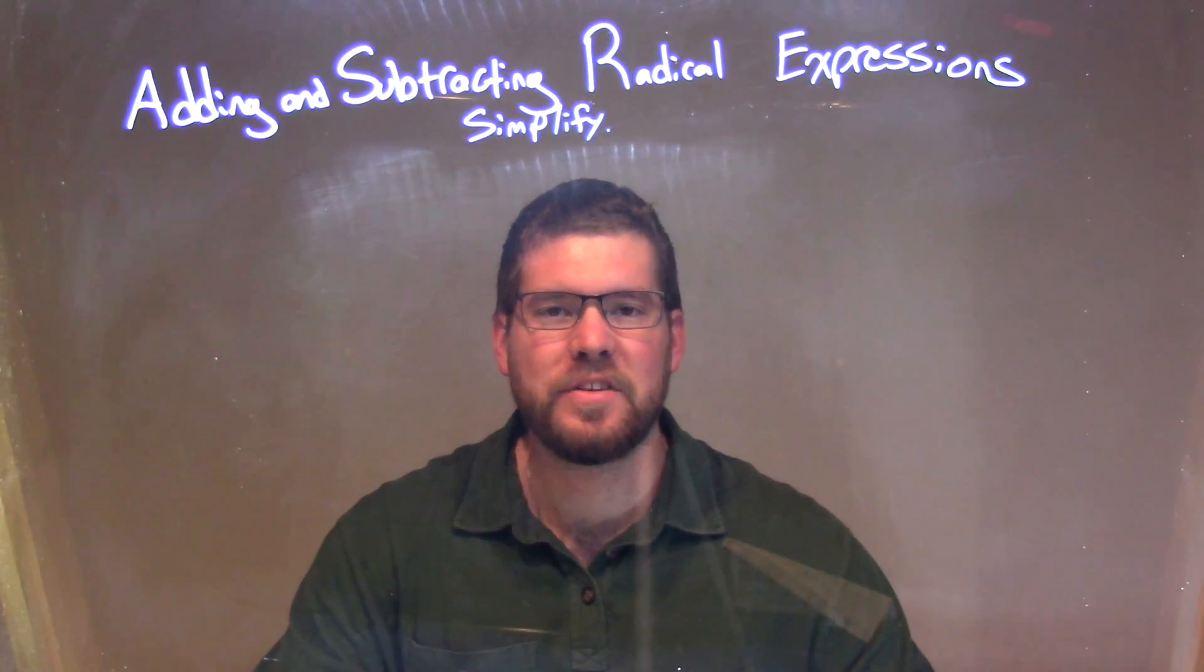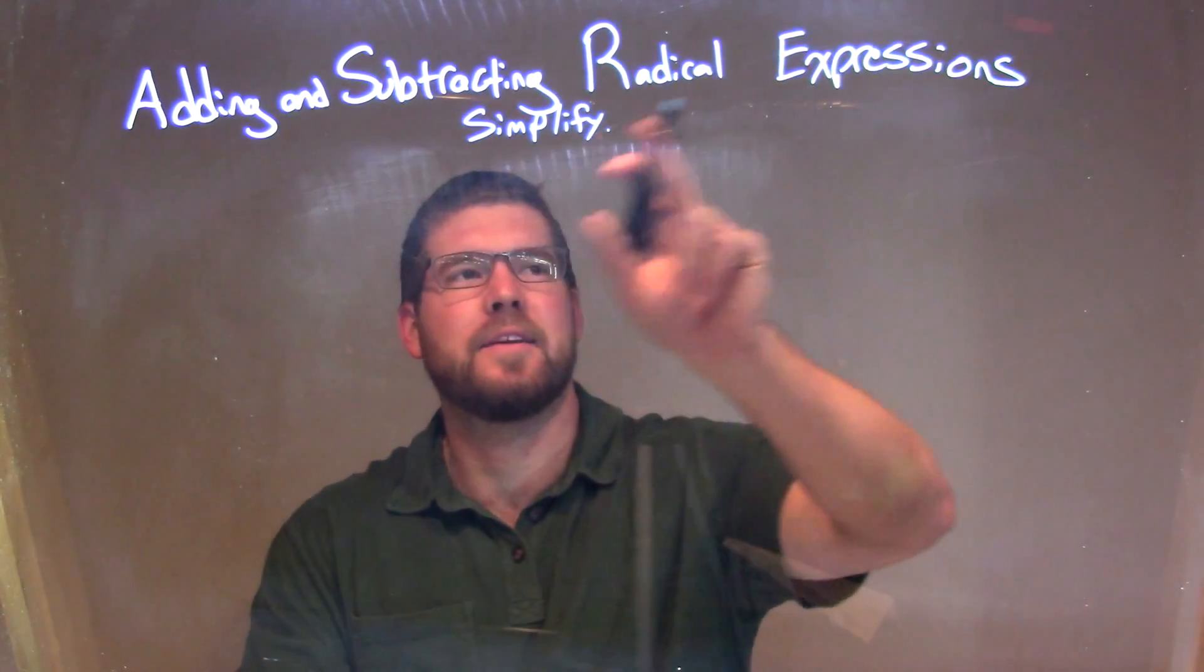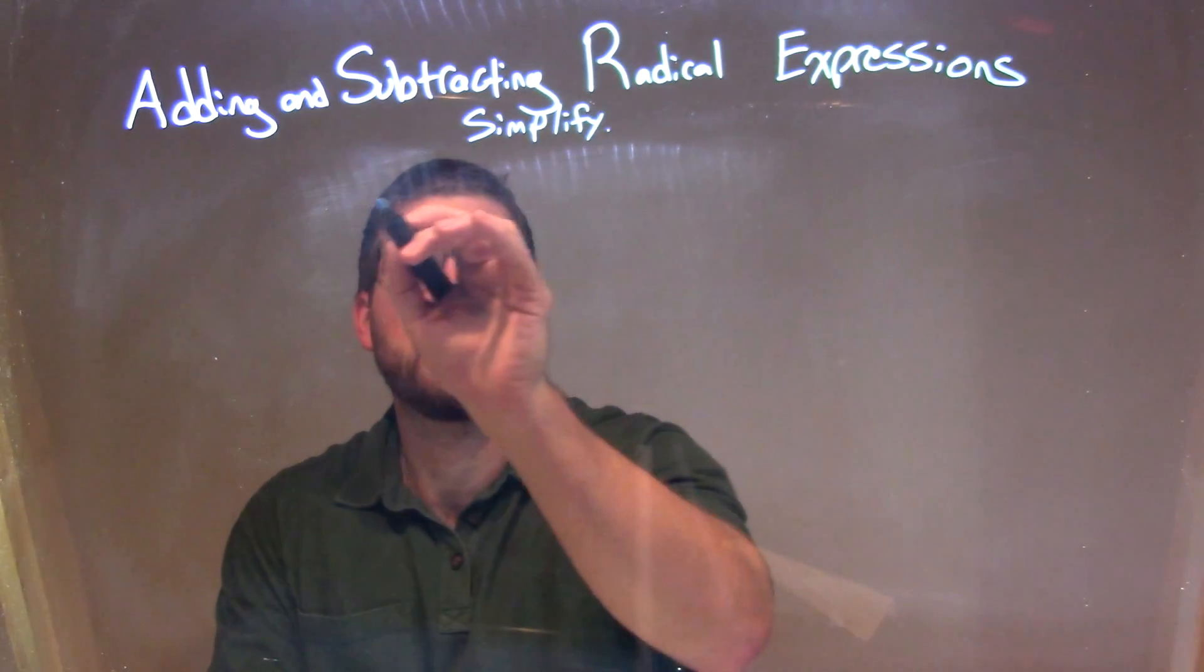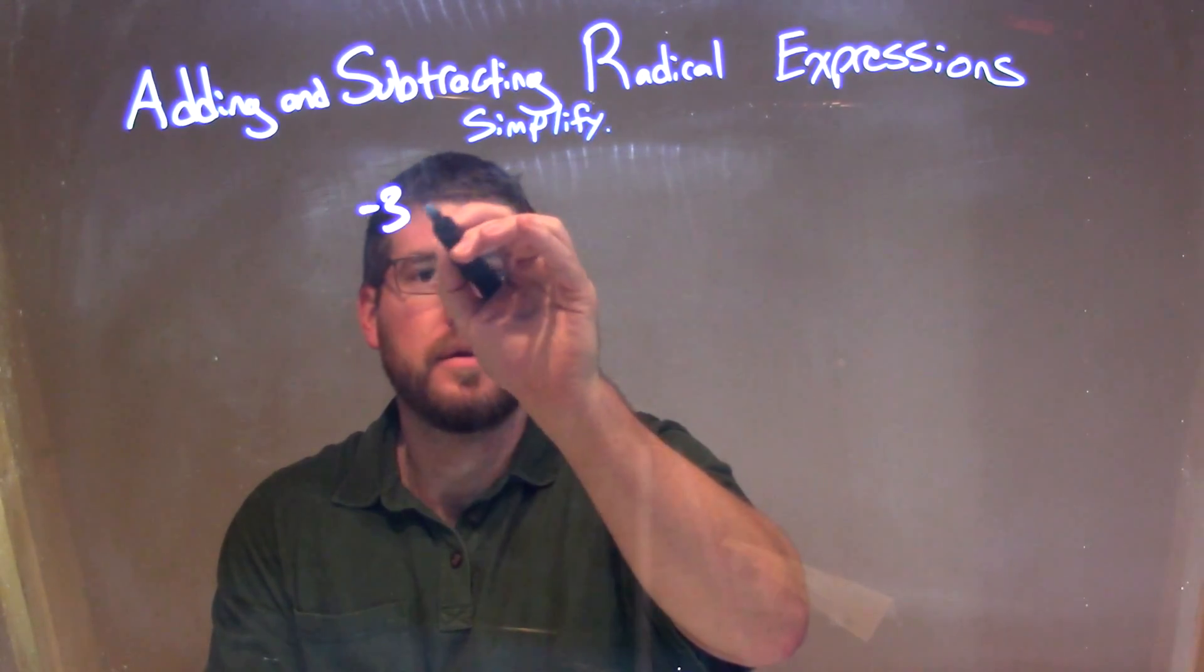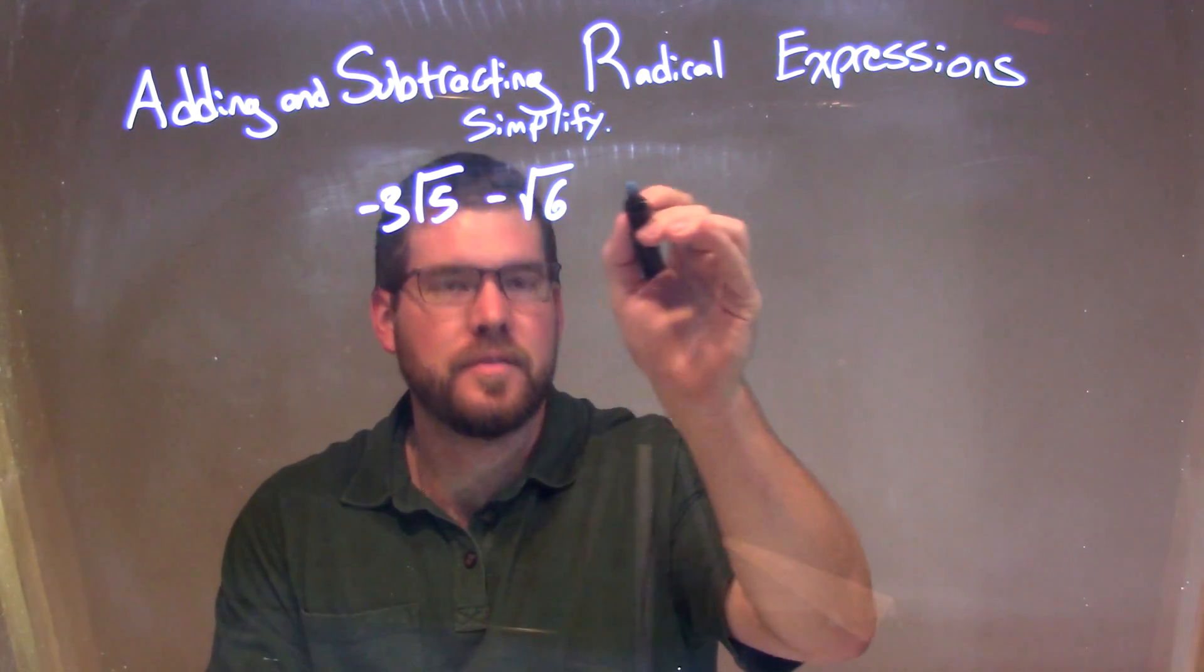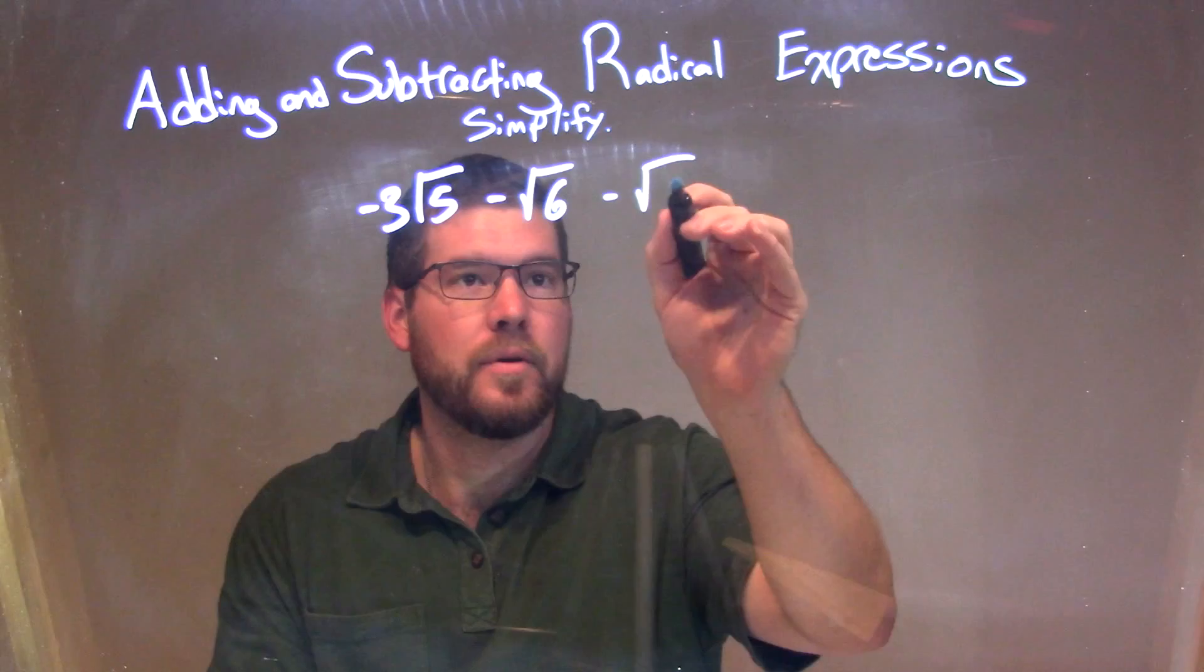Hi, I'm Sean Gannon, and this is MinuteMap. Today we're going to learn about adding and subtracting radical expressions. So if I was given this expression: negative 3 times the square root of 5, minus the square root of 6, minus the square root of 5.